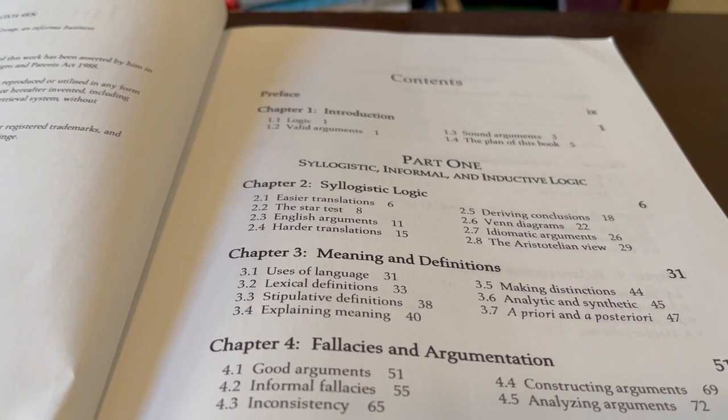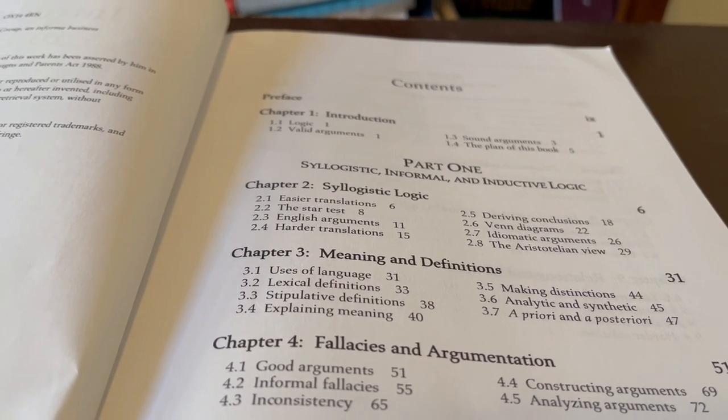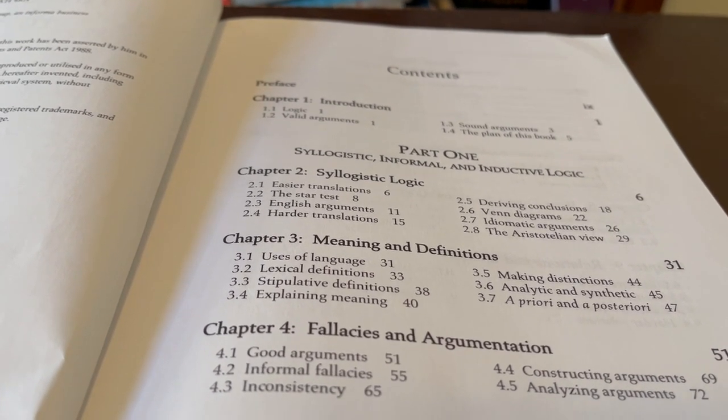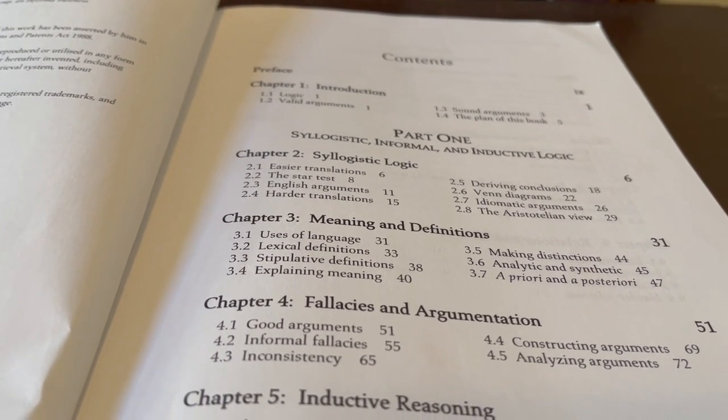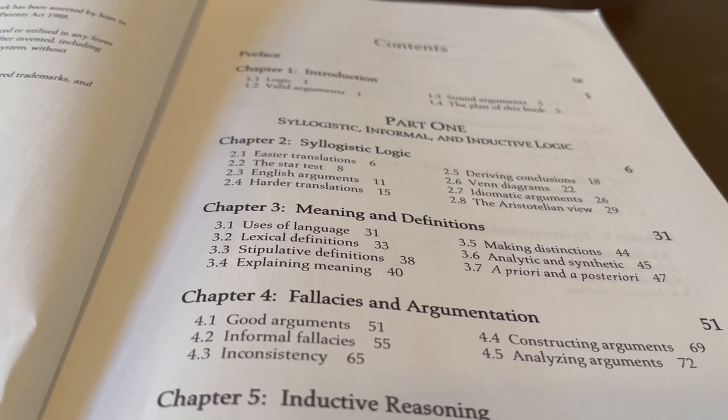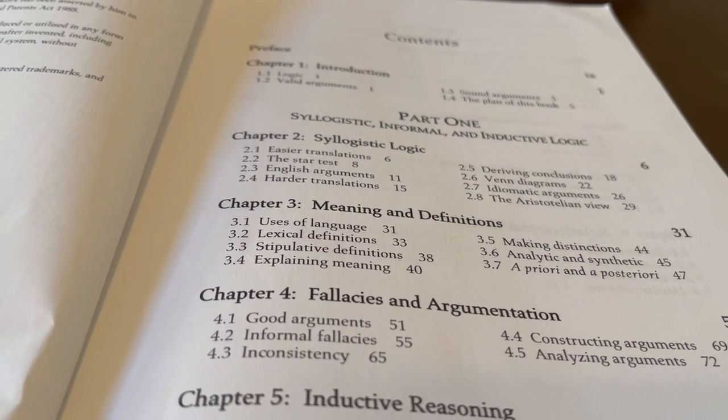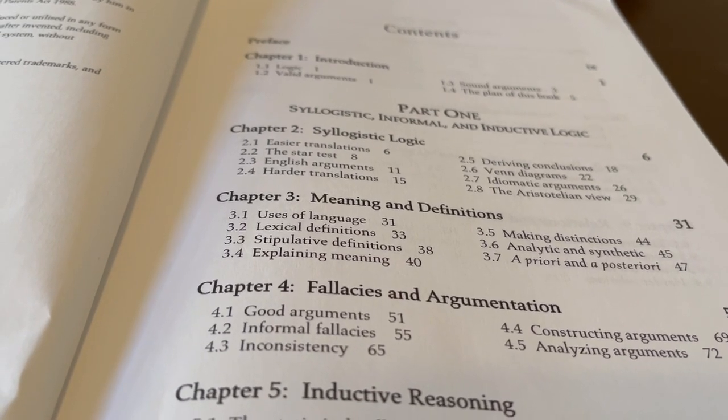Chapter one, of course, is introduction. What is logic? What's a valid argument? What's an invalid argument? What's a sound argument? What's an unsound argument? Then part two, we get into syllogistic, informal, and inductive logic. Chapter two is on syllogistic logic, also known as categorical logic, which is basically a very simplified version of Aristotelian scholastic logic.